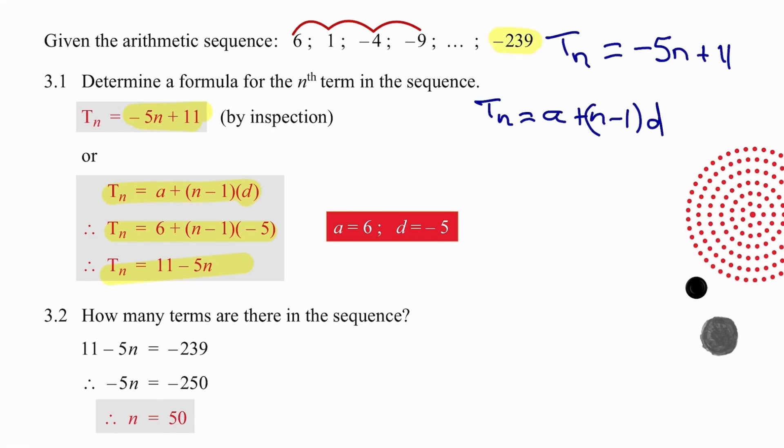More important question now is how many terms do we actually have? So we're going to equate the value of the nth term, in other words, the last term, with the formula that we have just worked out. And we end up working out that N equals 50. And we need this because if we don't have that information, we can't work out the sum. Pause the video again, see if you can work out the sum of the terms now, and then we can check the answer together.